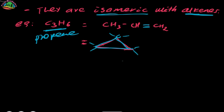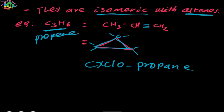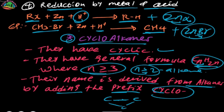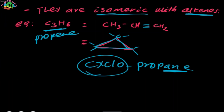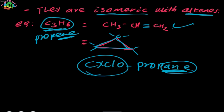For example, cyclopropane uses the prefix cyclo. It is an isomer of propene — cyclopropane is isomeric with the normal alkene. We can add the prefix cyclo to form cyclopropane, which is an isomer of propene.